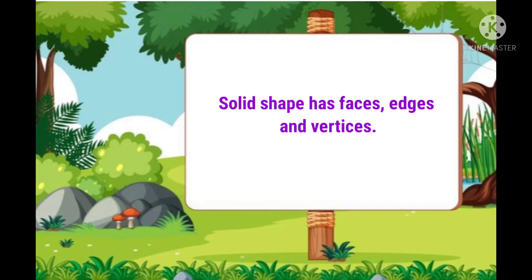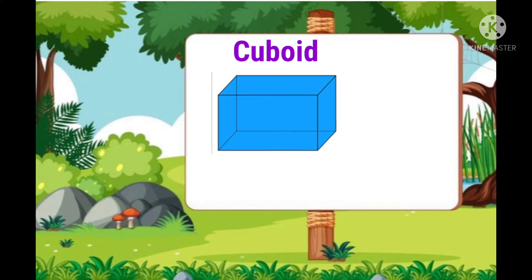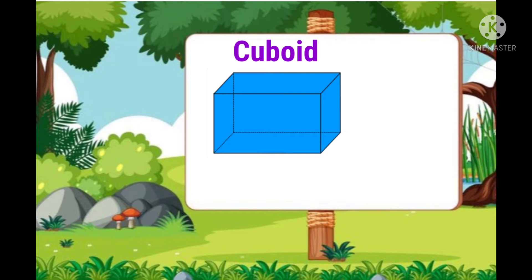Let us first learn about cuboid. Some objects have the shape of a matchbox. We call this shape a cuboid. A cuboid has vertices, edges and surfaces.